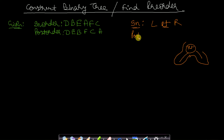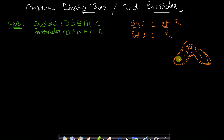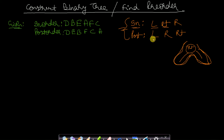In post-order traversal, we first traverse the left subtree, then traverse the right subtree, and after traversing both the left and right subtrees, when we come back to the root, then we process the root. So in in-order we have left-root-right, and in post-order we have left-right-root.